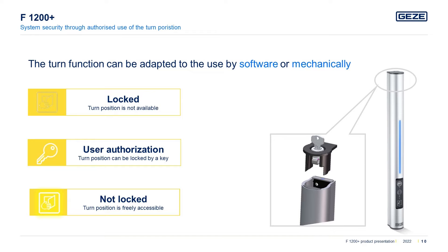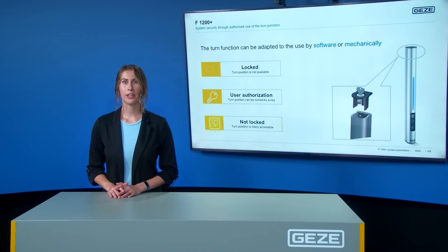If the window may only be turned by authorized users to ensure safety and building security, the turning position can be blocked by software or mechanically. This is especially useful in multi-story buildings such as hotels, offices, and public buildings. If the turn position is software-blocked, the button with the turn icon is not lit up, indicating that this function is currently not available. The turn position can also be blocked mechanically by means of a lock on the drive and a corresponding key, allowing the janitor or facility manager to release it if required.